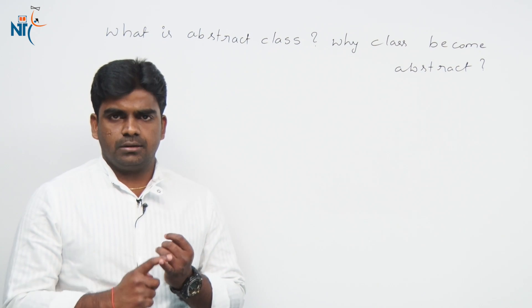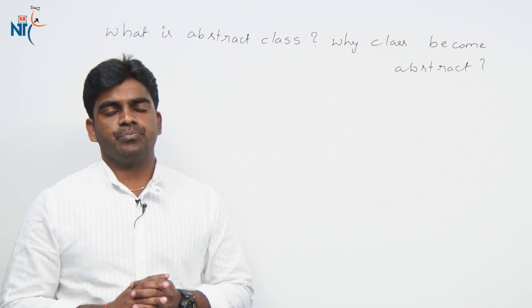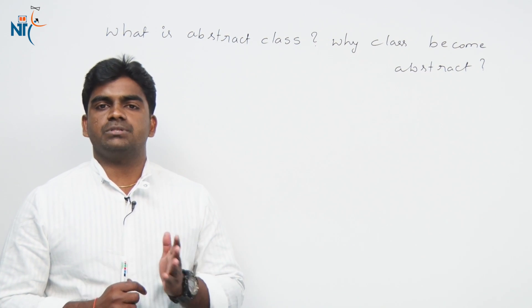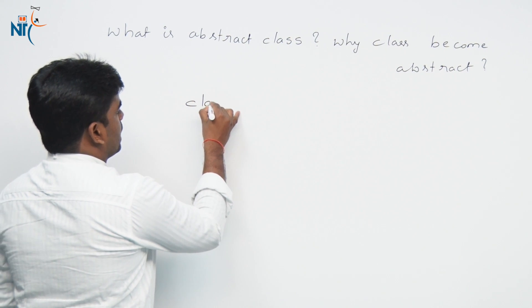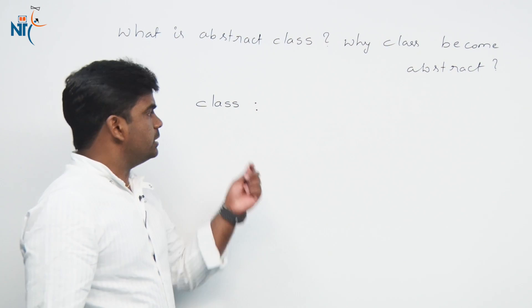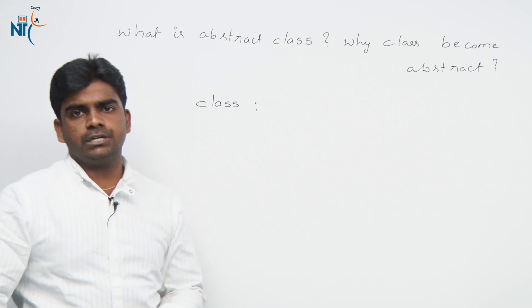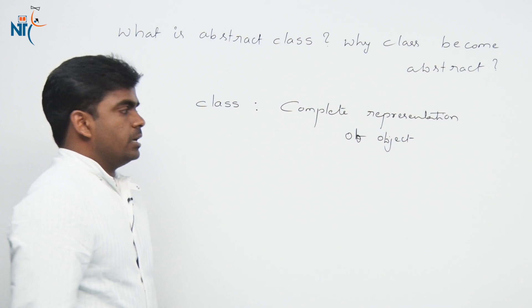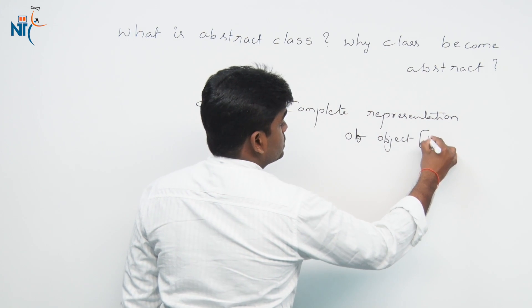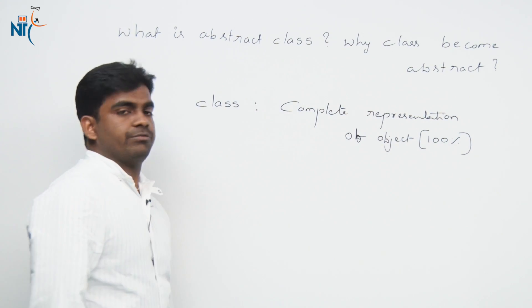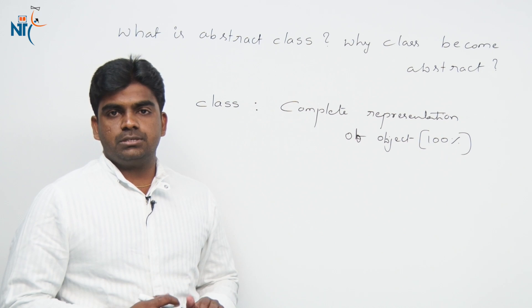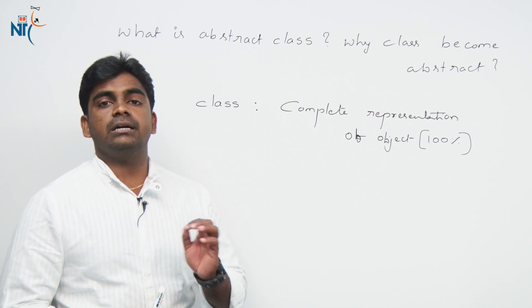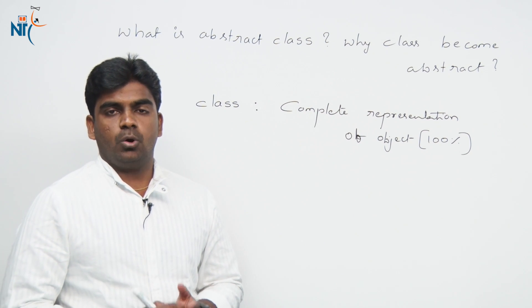We have two types of classes: a general class, which we can also call a concrete class, and an abstract class. A concrete class is the complete definition of an object — a complete representation. It means 100 percent defined. All the methods are concrete methods, meaning every method has a definition — a body. Only concrete methods are allowed.